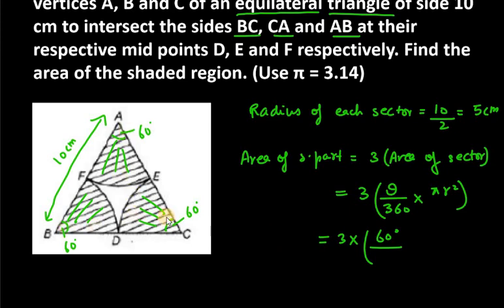So you can see that theta for all the cases is 60, therefore I have taken thrice here. Now you have to put pi value that is 3.14, r squared as 5 squared or you can write 25. Now 60 over 360 can be reduced to 1 over 6, 3 and 6 can be reduced to 2.